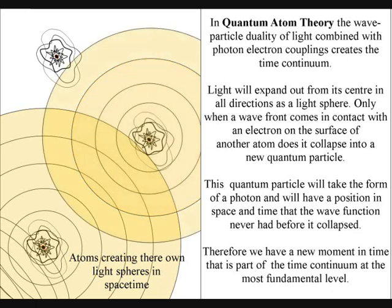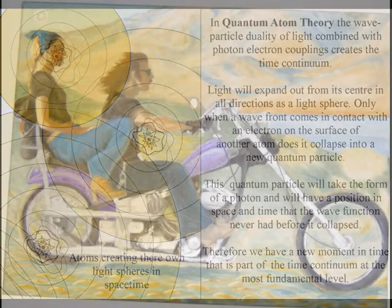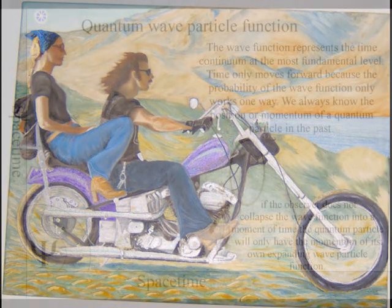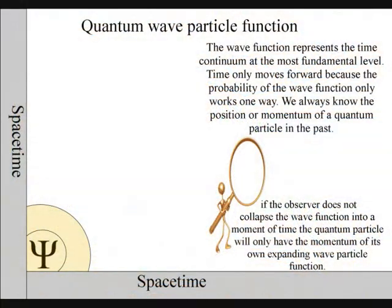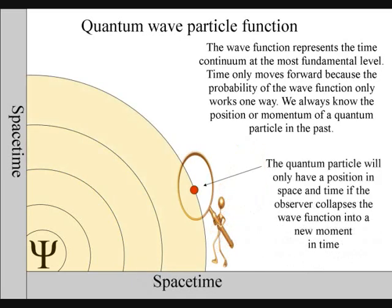Time only moves forward because the probability of the wave function only works one way. We always know the position or momentum of a quantum particle in the past. The uncertainty principle of quantum mechanics is the same uncertainty that the observer will have with any future event. The quantum particle will only have a position in space and time if the observer collapses the wave function into a new moment in time.